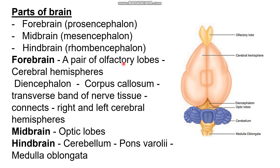In the forebrain, we have a pair of olfactory lobes and the cerebral hemispheres — left and right cerebral hemispheres — and the diencephalon. As seen in the diagram, the left and right cerebral hemispheres are connected by a transverse band of nervous tissue inside, which is called the corpus callosum.